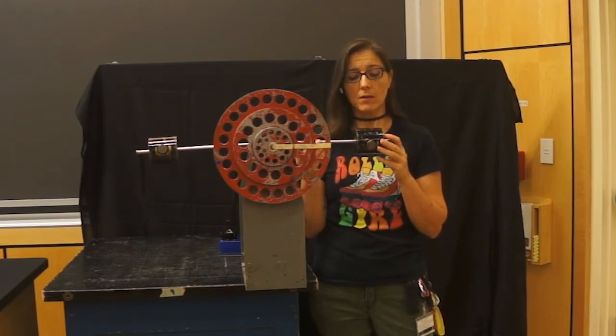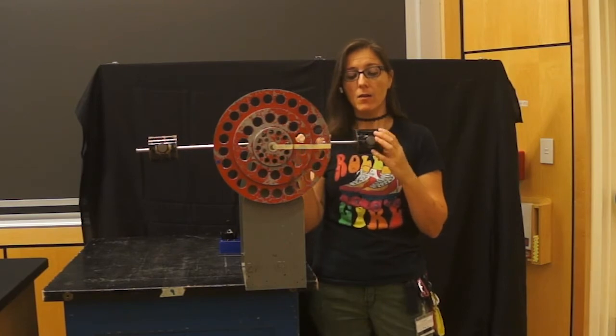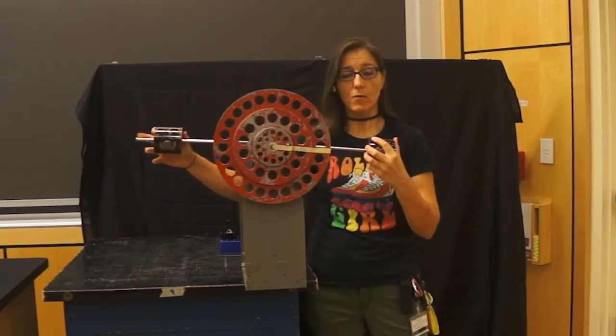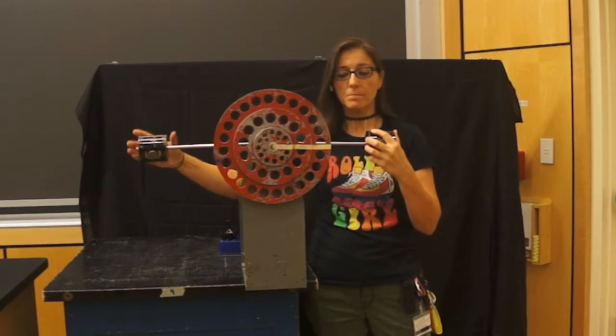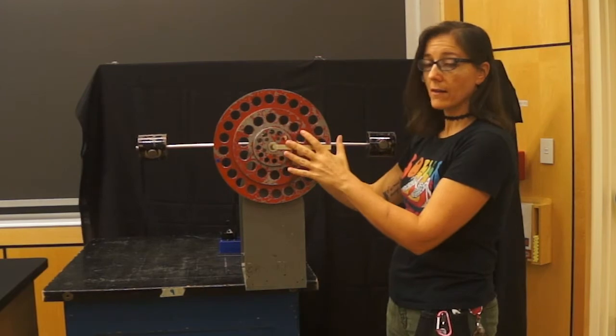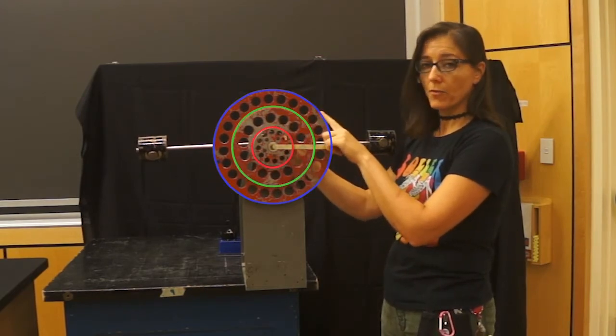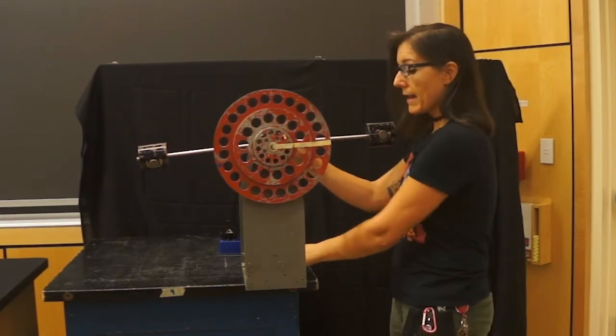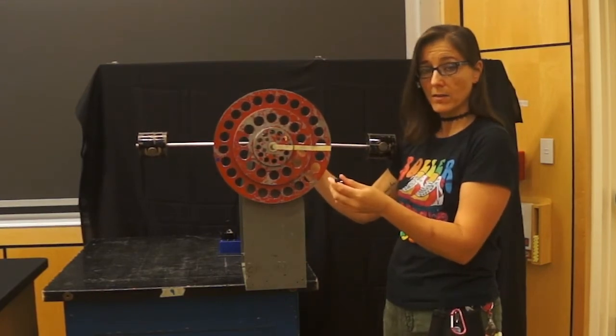What we have here is a rod with adjustable masses on it. These masses can be moved back and forth. In addition to that, we have this connected to a set of discs that have three different tracks on them on which we can connect a string and a hanging mass to set the system into motion.